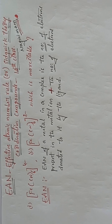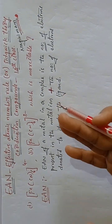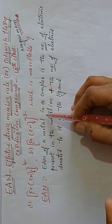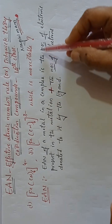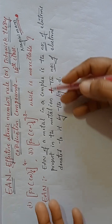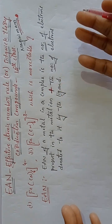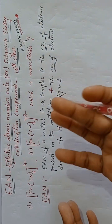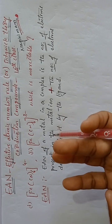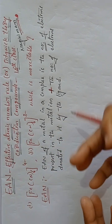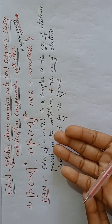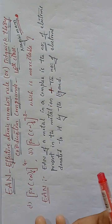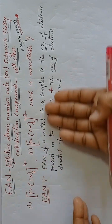EAN rule: what is EAN? We are calculating the Effective Atomic Number for the Metal Ion. Effective Atomic Number of a Metal in a Complex is the number of Electrons present in the Metal Ion, plus the number of Electrons donated to it by the Ligand. The Ligand is always an Electron Donor — it donates a lone pair. The total number of Electrons represents the Effective Atomic Number.